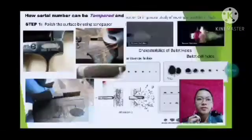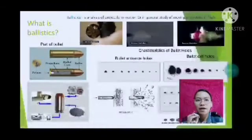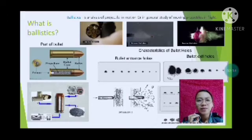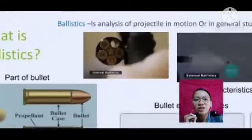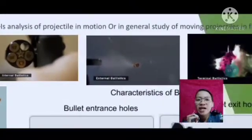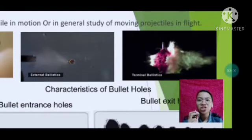What is ballistics? Ballistics is an analysis of a projectile in motion, or the general study of moving projectiles in flight. There are three types: internal ballistics — what happens inside the barrel; external ballistics — what happens to the bullet after it exits the muzzle; and terminal ballistics — what happens to the bullet when it reaches the target surface.